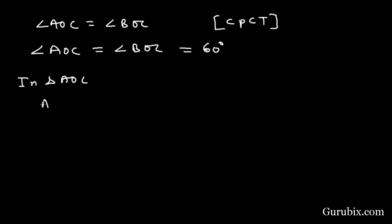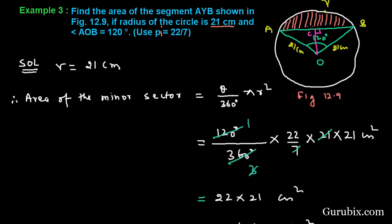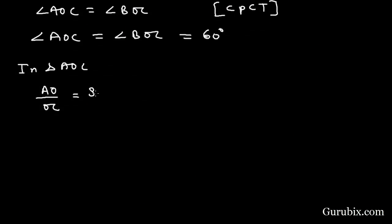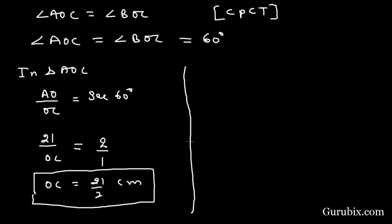Now in triangle AOC, we find the ratio of AO over OC, which is hypotenuse over base — that is sec theta. Theta is 60 degrees, and sec 60 degrees equals 2. AO is given as 21 cm. Therefore OC equals 21 over 2 cm.